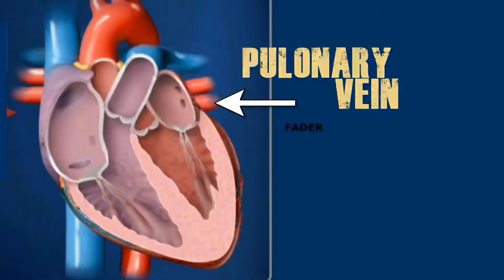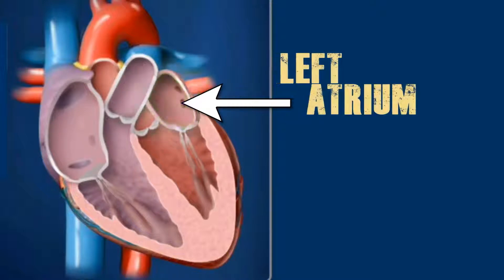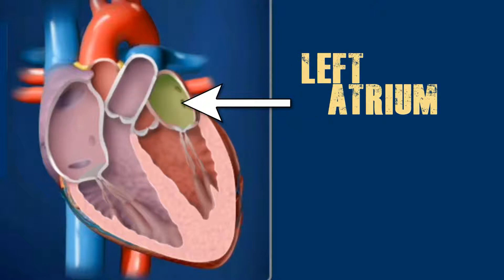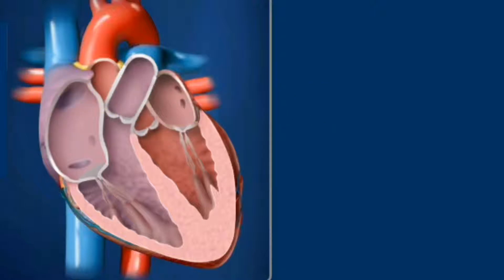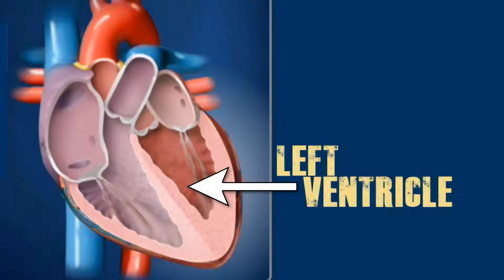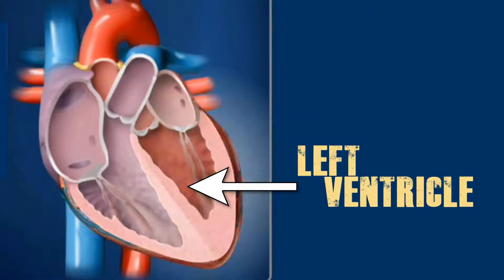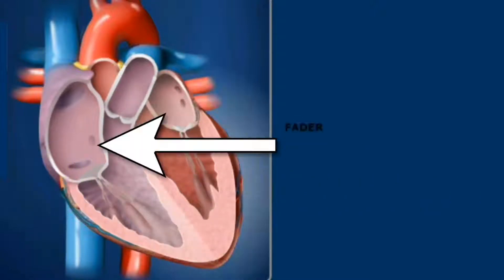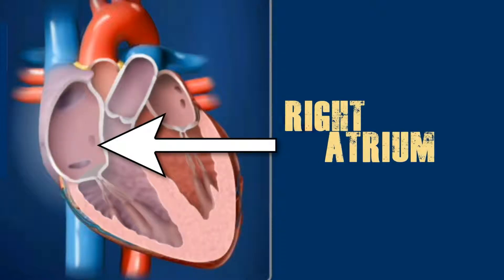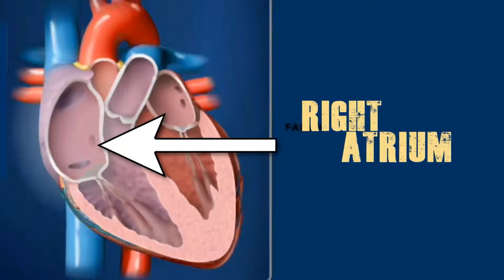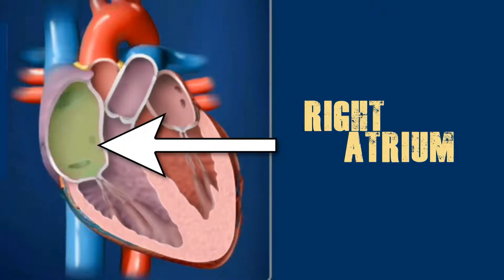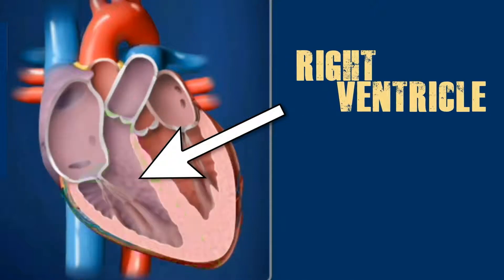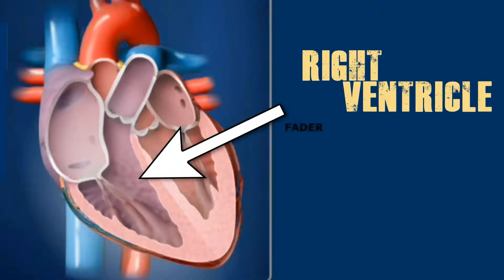Now let's see the interior parts. Number one — left atrium: a hollow chamber that collects oxygen-rich blood from the pulmonary vein before sending it to the left ventricle. Number two — left ventricle: a hollow chamber that collects oxygen-rich blood from the left atrium before sending it to the aorta. Number three — right atrium: a hollow chamber that collects blood lacking oxygen from the vena cava before sending it to the right ventricle. Number four — right ventricle: a hollow chamber that collects blood lacking oxygen from the right atrium before sending it to the pulmonary arteries.